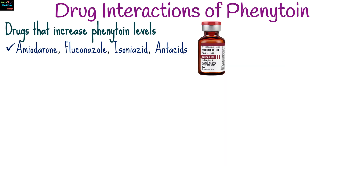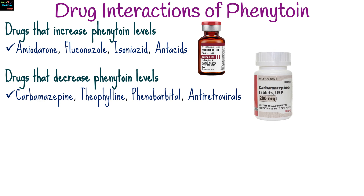Phenytoin interacts with many drugs because it is metabolized in the liver by the cytochrome P450 system. It can induce the metabolism of other drugs, leading to decreased efficacy of those medications, or can be affected by other drugs. Drugs that increase phenytoin levels include amiodarone, antifungals like fluconazole, certain antibiotics like isoniazid, and certain antacids. Drugs that decrease phenytoin levels include carbamazepine, theophylline, phenobarbital, and certain antiretrovirals.